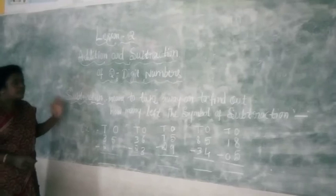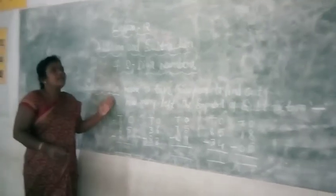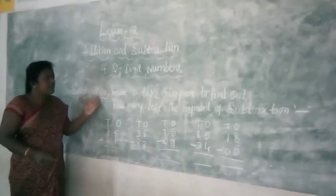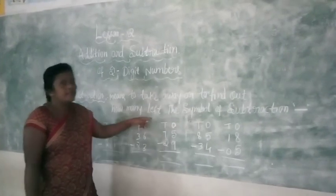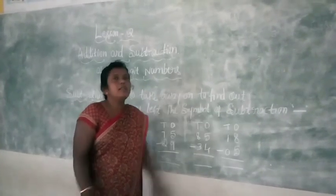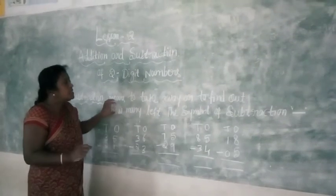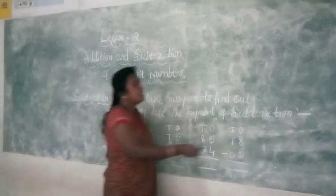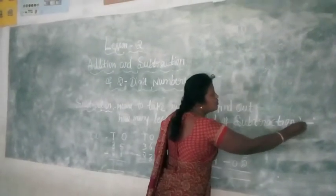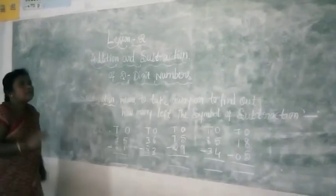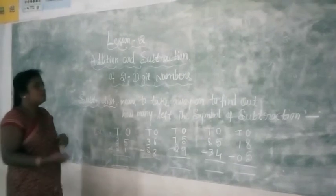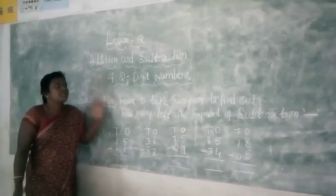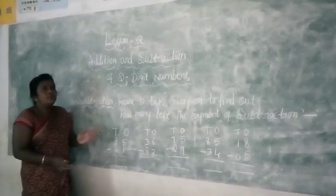First of all, subtraction means to take away or to find out how many left. The symbol of subtraction is minus. Subtractions are 3-digit numbers and subtraction. Then, the numbers are 1-digit numbers, to find out how many left the number is.